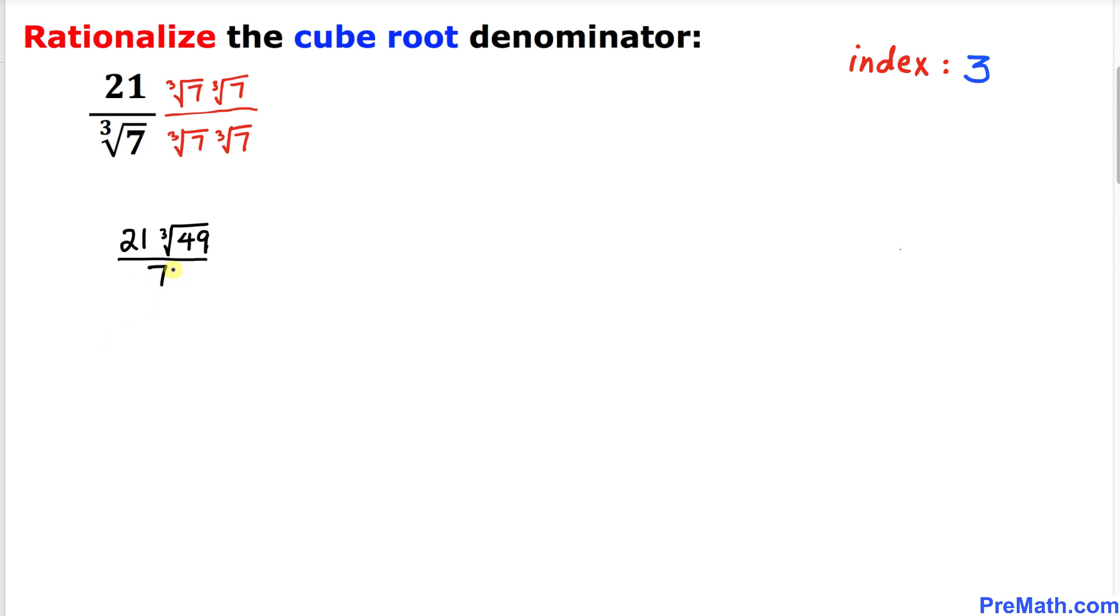Let's go ahead and simplify this. 7 goes into 21 three times. So our complete answer is going to be 3 times the cube root of 49. That is our simplified answer.